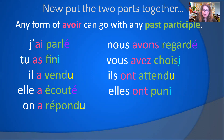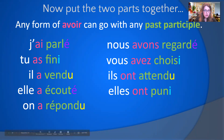Regardé ends with an ER, so its past participle ends with é (accent aigu). Choisir is an IR verb — its past participle ends with I, like finir. Attendre, like vendre, is an RE verb — both take U for the past participle. The same applies to répondre and punir.